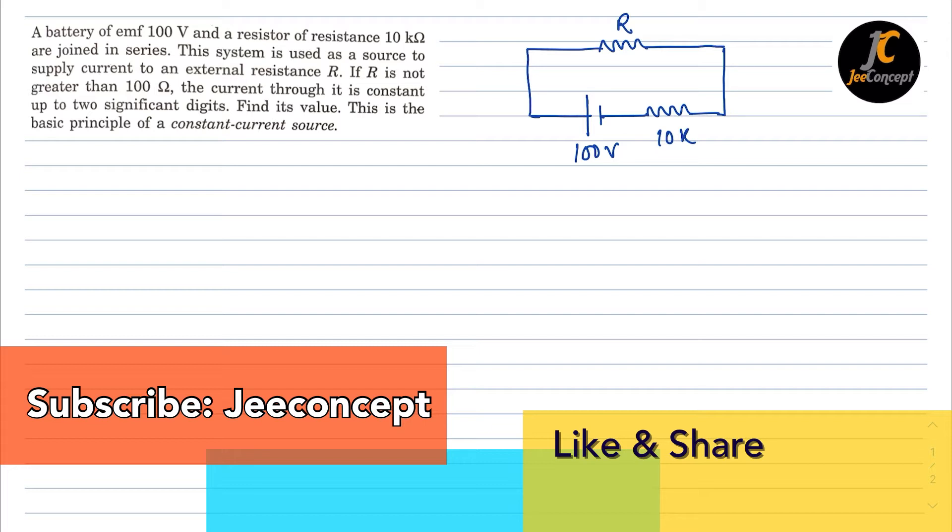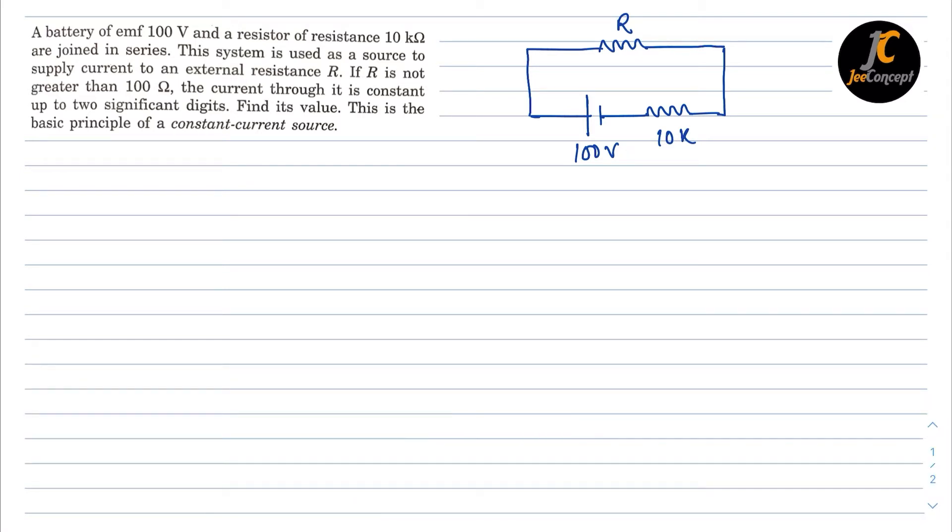If R is not greater than 100 Ω, the current through it is constant up to two significant digits. Find its value. So in this question the value of R is always less than 100 Ω or equal to 100 Ω. So there could be multiple values we can take.